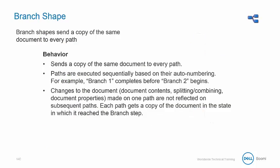Branch shapes send a copy of the same document to every path. These are executed sequentially based on their auto-numbering. Changes to the document made on one path are not reflected on subsequent paths — each path gets a copy of the document in the state in which it reached the branch shape.